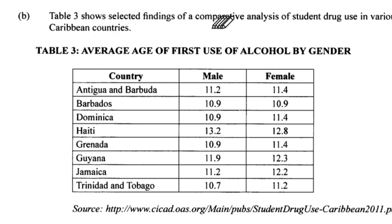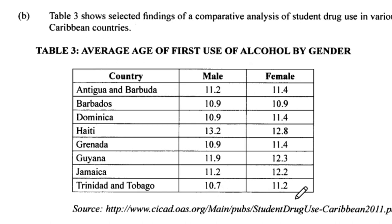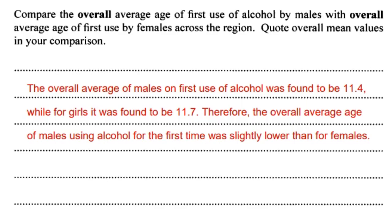Figure 4 shows selected findings from a comparative analysis of student drug use in various Caribbean countries, specifically the average age of first use of alcohol by gender. Trinidad shows close to 10–11 years old for both males and females. Part 1: compare the overall average age of first use of alcohol by males with that of females across the region, quoting the overall mean values. By summing all values and dividing by 8 countries, males average 11.4 years and females 11.7 years.